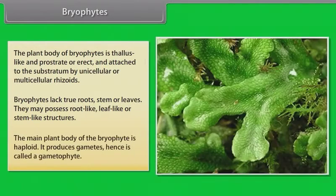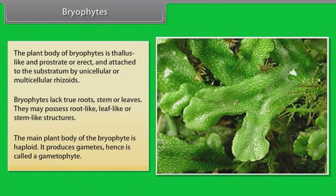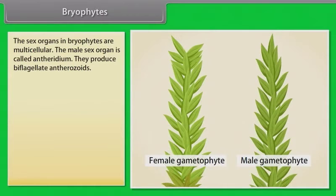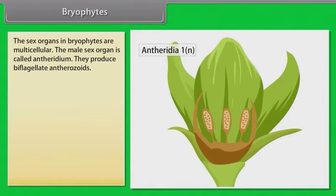The main plant body of the bryophyte is haploid. It produces gametes, hence is called a gametophyte. The sex organs in bryophytes are multicellular. The male sex organ is called antheridium. They produce biflagellate antherozoids.